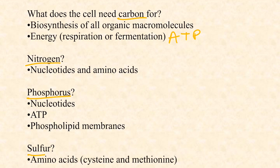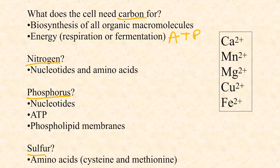These macronutrients — carbon, nitrogen, phosphorus, and sulfur — are used in organic biosynthesis. There are also inorganic macronutrients used as cofactors to support enzyme function. A cofactor is an inorganic molecule or ion necessary for enzyme function — if an enzyme requires it, it absolutely must have it. For example, DNA polymerase requires a magnesium ion. Without it, the polymerase won't function, DNA replication can't take place, and neither can cell division.